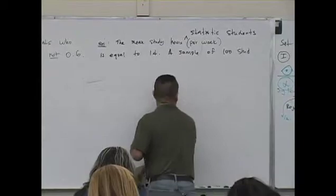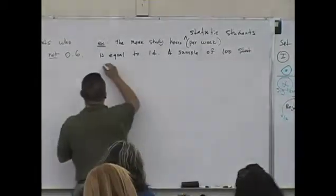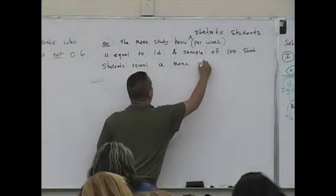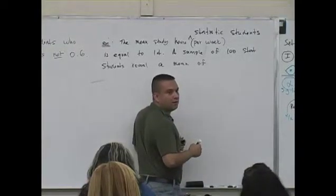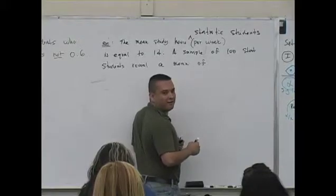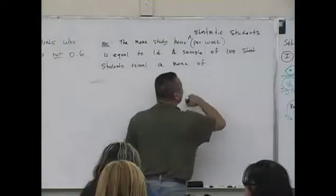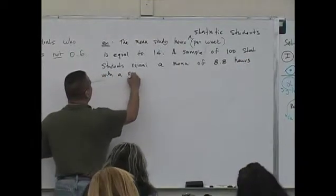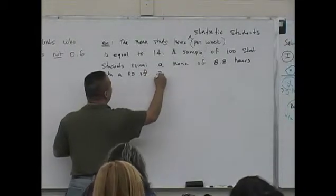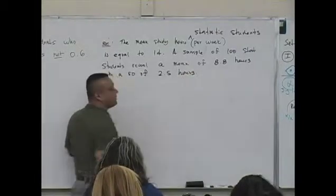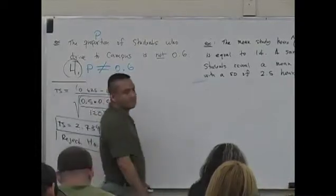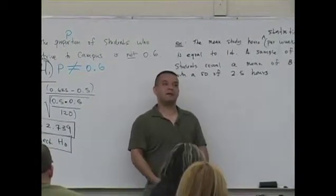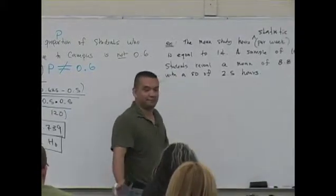A sample of 100 students, statistic students, reveal a mean of what? Two hours? No. Reveal a mean of 8.8 hours with a standard deviation of 2.5 hours. That's not very consistent, right? You know, the consistency is a high value. That's standard deviation is consistency. Oh, you should. If you're a student, your job is what? To work. Study. To work. To work for the average.